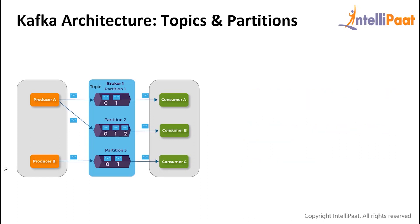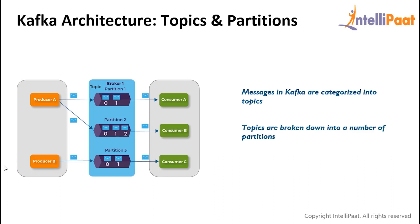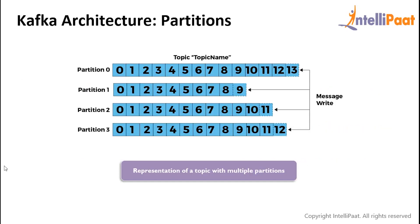Now let's look at messages. Messages in Kafka are categorized into topics and these topics are broken down into a number of partitions. Reading messages can be done in order from beginning to end, and we can also skip or rewind to any point in a partition by providing an offset value. The offset value is the sequential ID provided to the messages. These partitions provide redundancy and scalability, and they can be hosted on different servers, meaning a single topic can be scaled horizontally across multiple servers, thus enhancing performance. A record is stored on a partition either by record key if the key is present, or by round-robin if the key is missing.